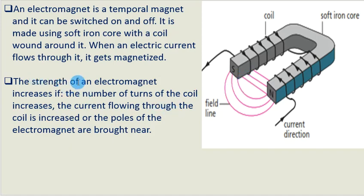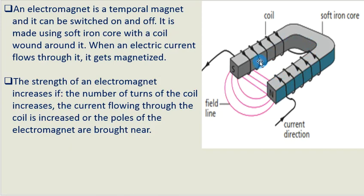To ensure that we have a south and a north pole, we must make sure the windings are done so that current flows in opposite directions. When current passes through the coil, that is when the soft iron core gets magnetized. This magnet can be switched off — it can be demagnetized when you switch off and there is no current passing through the coil, and it is no longer a magnet. That is why it is called an electromagnet — it can be switched on and off. It is a temporary magnet.